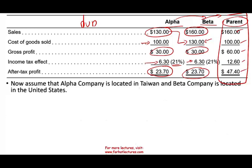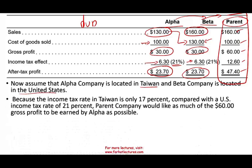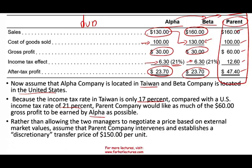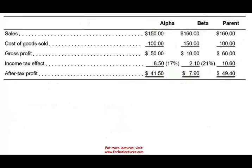Then we said: let's assume that Alpha is located in Taiwan and Beta is located in the United States. The income tax rate in Taiwan is 17% compared to the US tax rate of 21%. The parent company would like as much of the $60 gross profit as possible to be taxed in Alpha, because the tax rate is lower in Taiwan. So we're going to change the transfer price — rather than the two managers negotiating a market-based price, the parent company intervened and established a discretionary price of $150. We're going to tell Alpha: sell to Beta not for $130, but for $150.